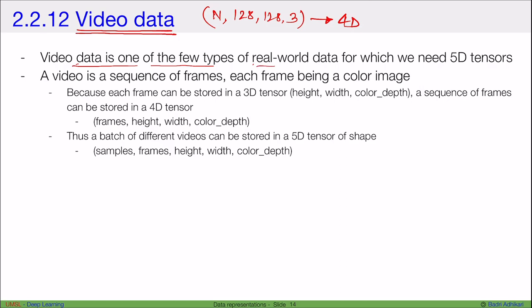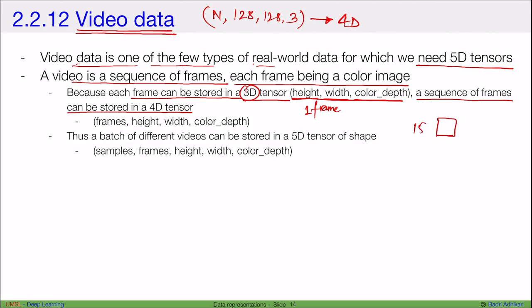Video data is one of the few types of real world data for which we need five-dimensional tensors. A video is a sequence of frames, each frame being a color image. So one color image, each frame can actually be stored in a 3D tensor because it's height, width, and color depth, right? So this is one frame. And a sequence of frames can be stored in a 4D tensor. So if I have 15 frames, then this can be stored in a 4D tensor. Thus, a batch of different videos can be stored in a 5D tensor.